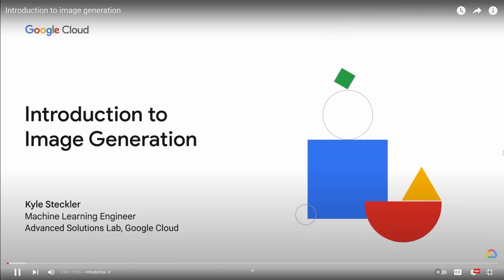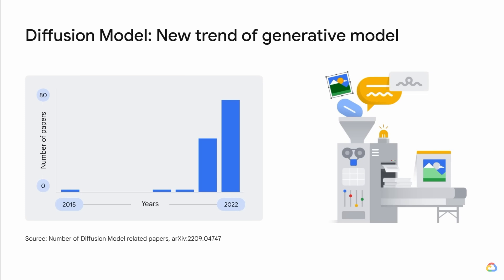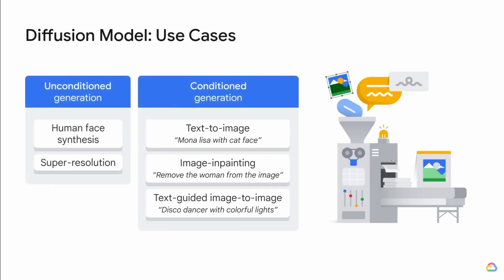Diffusion models underpin many of the state-of-the-art image generation systems you may be familiar with today. Unconditioned diffusion models, where models have no additional input or instruction, can be trained from images of a specific thing such as faces, and will learn to generate new images of that thing. We also have conditioned generation models, which give us text-to-image — generating an image from a text prompt — as well as image in-painting and text-guided image-to-image, where we can remove or add things and edit the image itself.